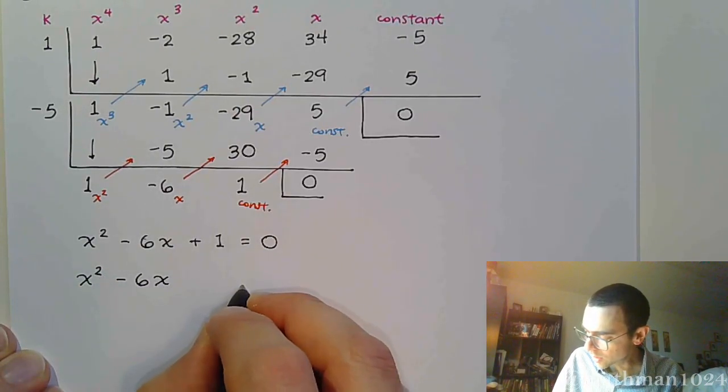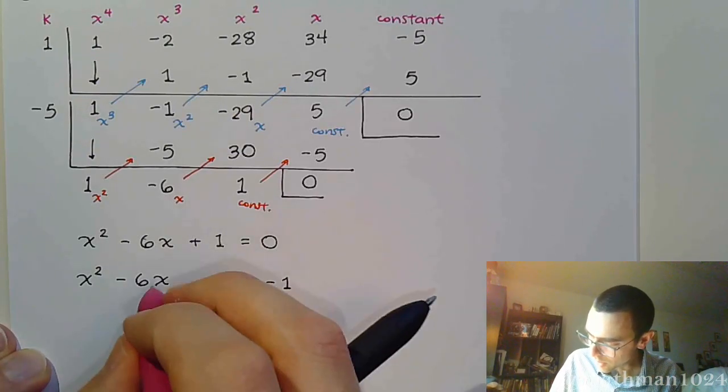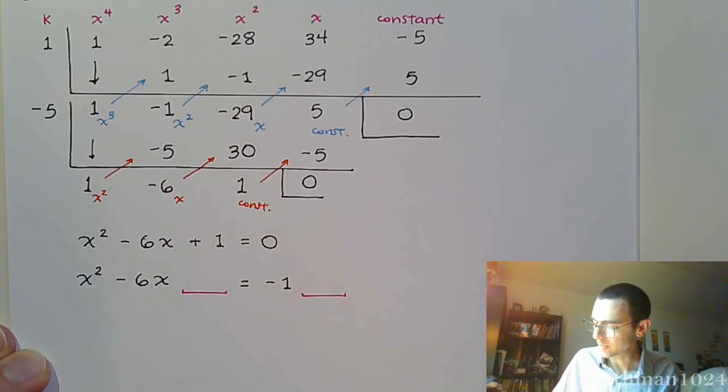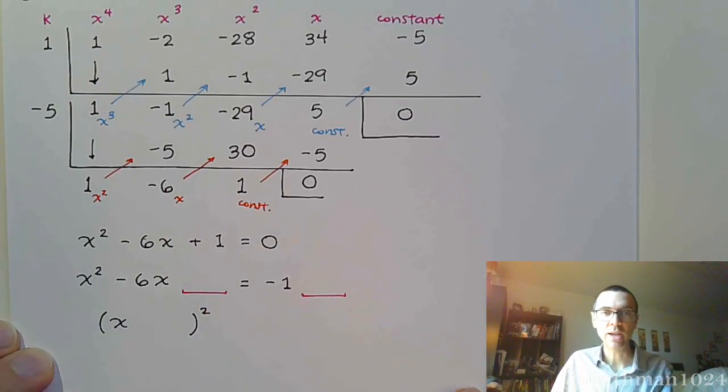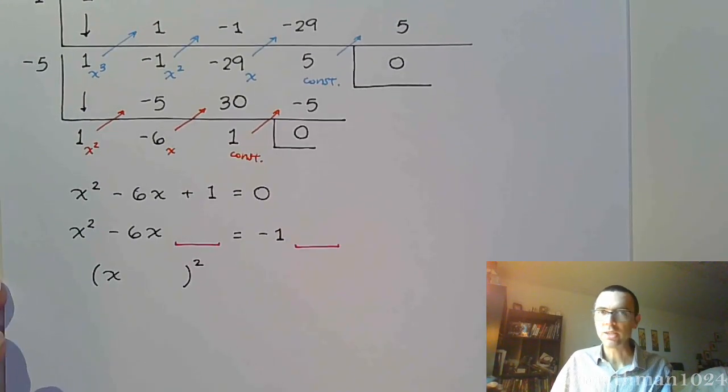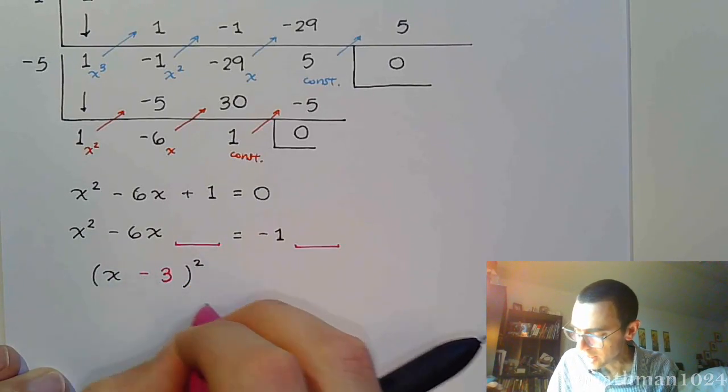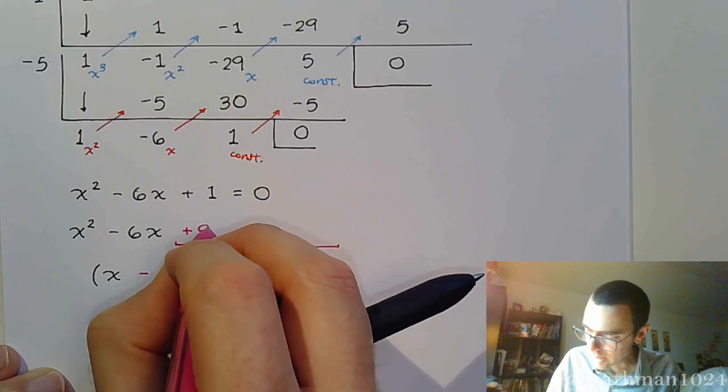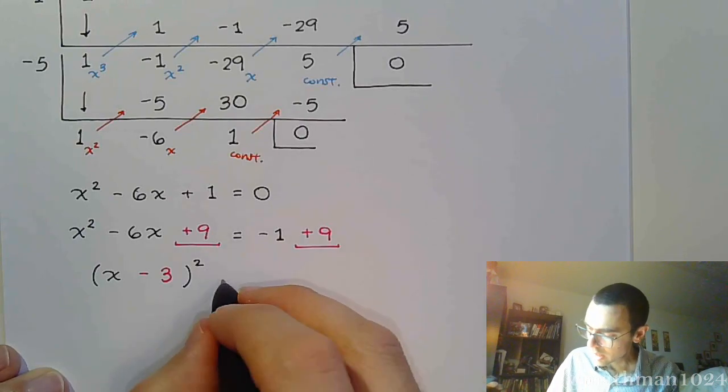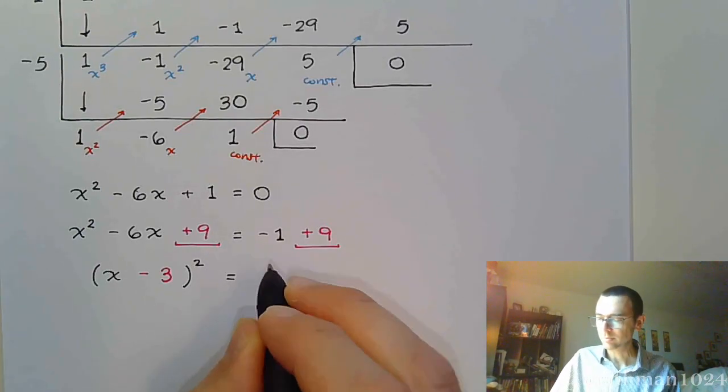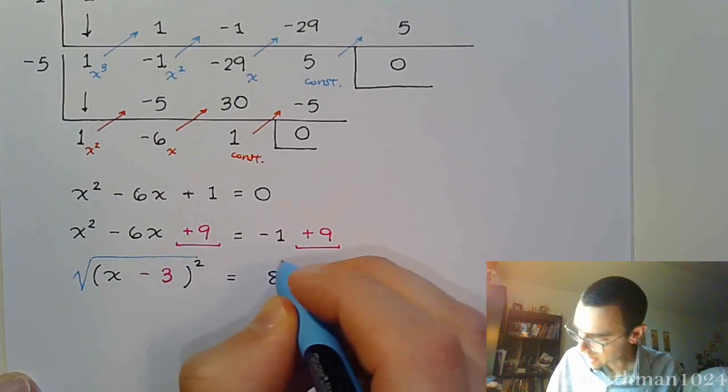So to complete the square, we move the 1 to the other side, so that's negative 1, and then we figure out what goes in the gap here. We understand that we're trying to find something so that it factors as the exact same two factors, and the way we do that is the same trick. Divide by 2 and square it. So half of negative 6 is negative 3. Negative 3 squared is positive 9 that we're going to add to both sides here. On the right side, we get positive 8, and now we use the square root property to finish solving this equation.